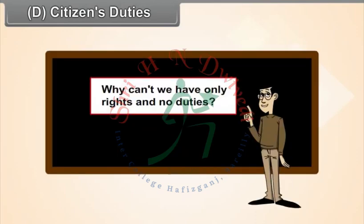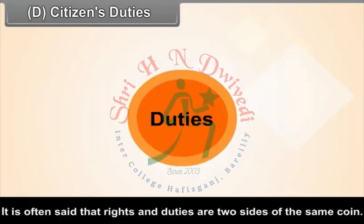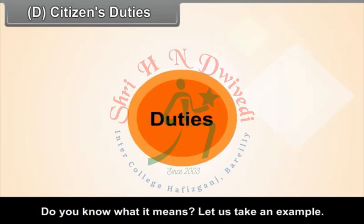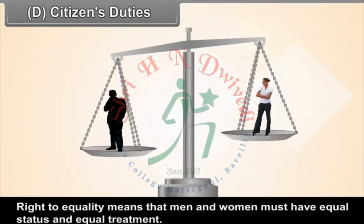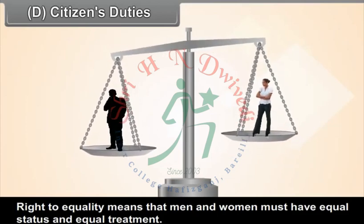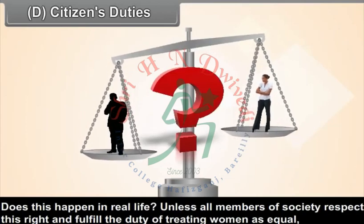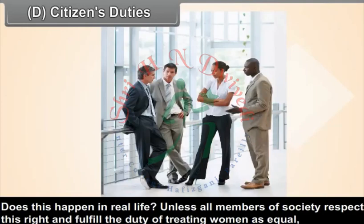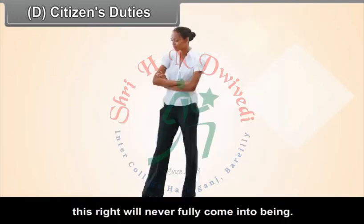Citizens' Duties. Why can't we have only rights and no duties? It is often said that rights and duties are two sides of the same coin. Right to equality means that men and women must have equal status and equal treatment. Unless all members of society respect this right and fulfill the duty of treating women as equal, this right will never fully come into being.